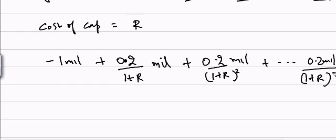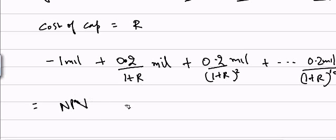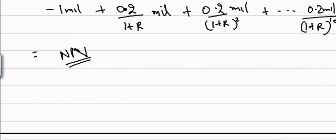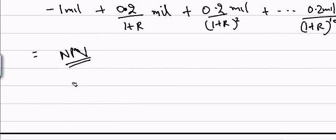If the net present value is positive, the company should go ahead with the project because it is generating value. If the NPV is less than zero, the company should not take the project because it would lose money.